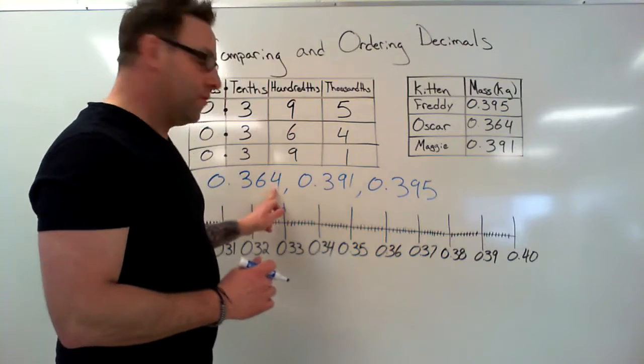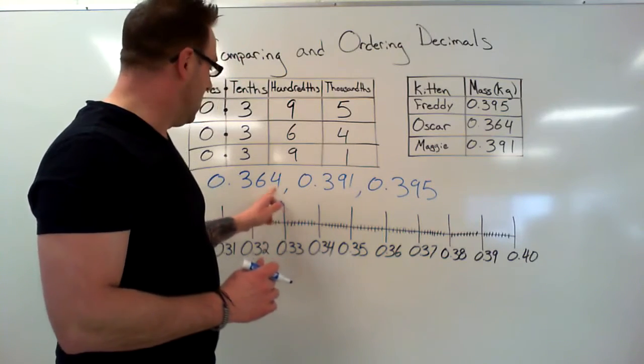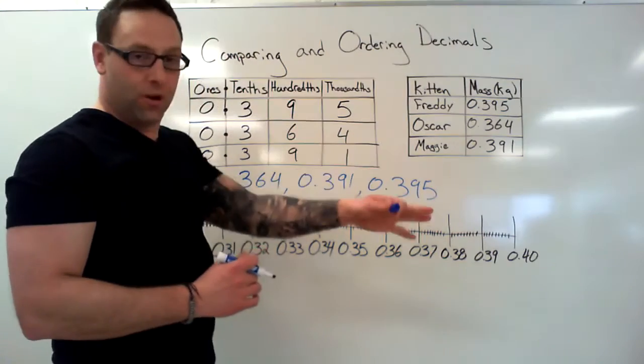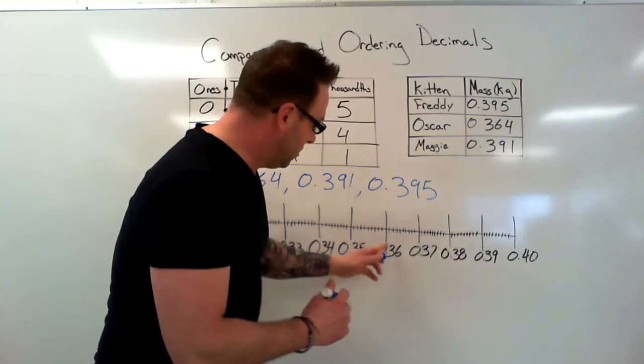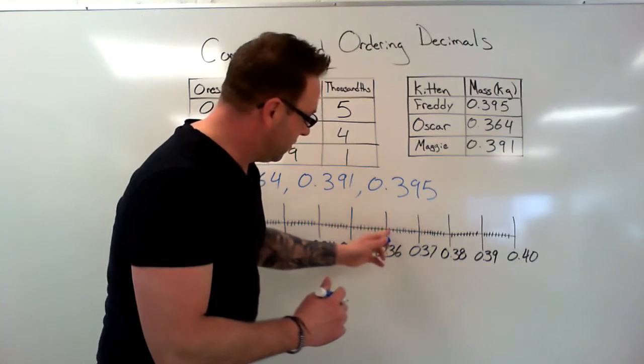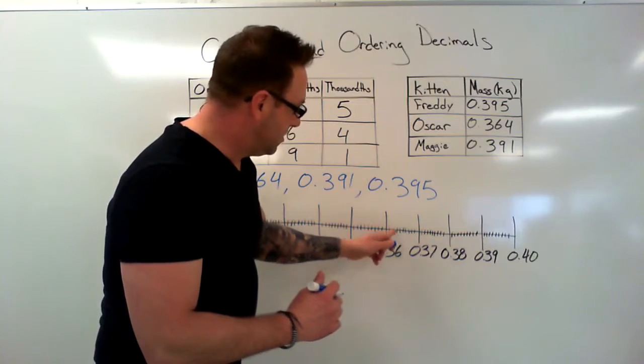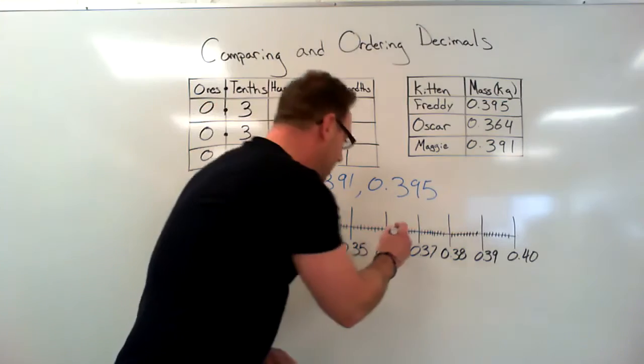Now we've got a point zero four in there as well. So we got zero point three six zero, zero point three six one, three six two, three six three, and there is zero point three six four.